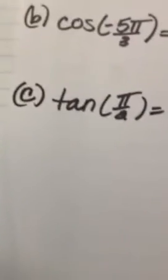Now the third question is tangent of pi over 2. So you want to take the unit circle again and find pi over 2 and pi over 2 is right here. And since it's tangent, you take sine over cosine. So 1 over 0 and 1 over 0 is undefined. So your answer is undefined.